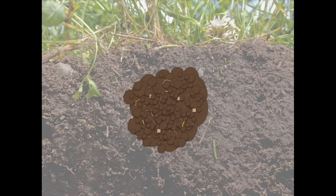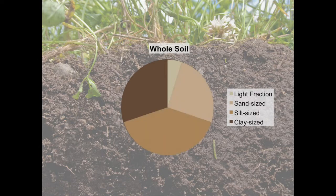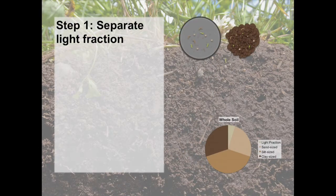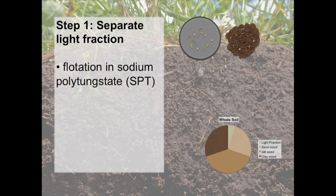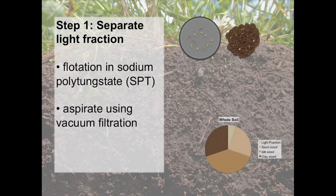In today's lab, we will demonstrate a common soil fractionation technique used to isolate the light fraction and sand, silt, and clay-sized fractions. Step 1 will be to separate the light fraction by floating it in a dense liquid known as sodium polytungstate, or SPT. The light fraction will float to the top because it is less dense than the other, mineral-associated fractions. Then we will aspirate it out of the liquid using a vacuum filtration system.